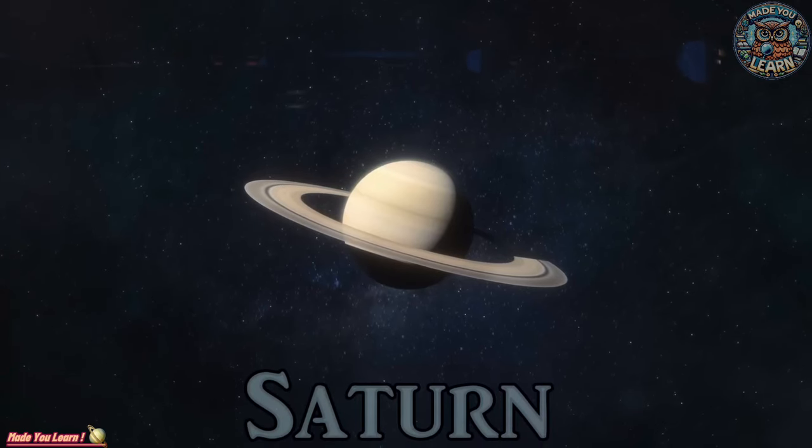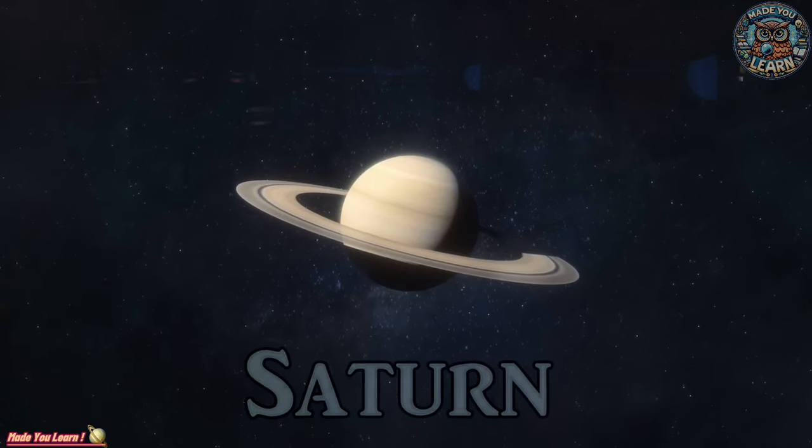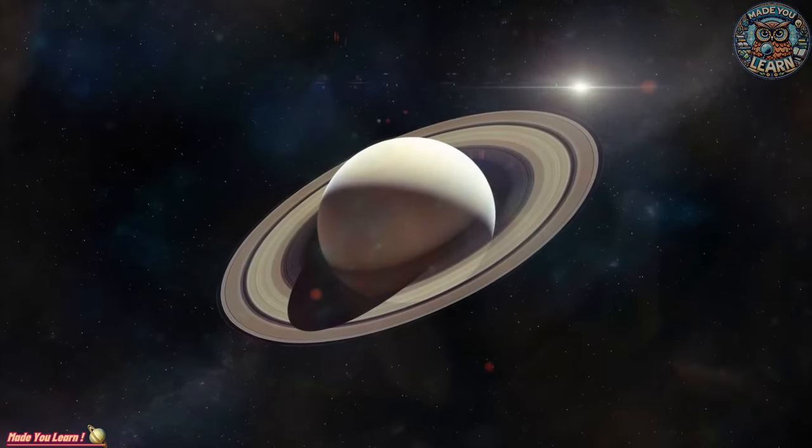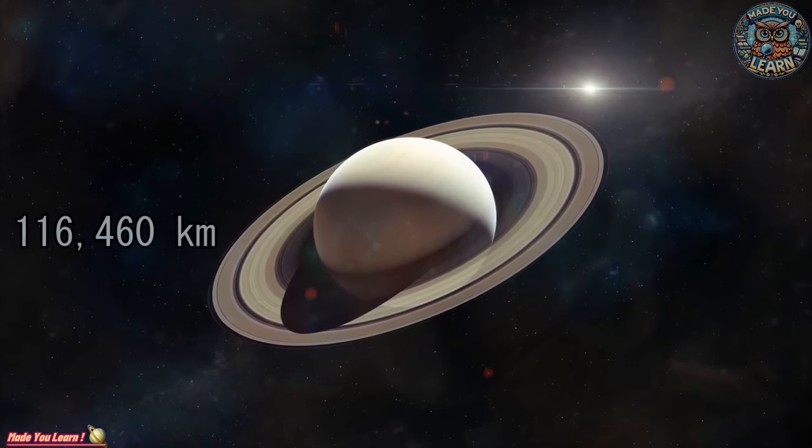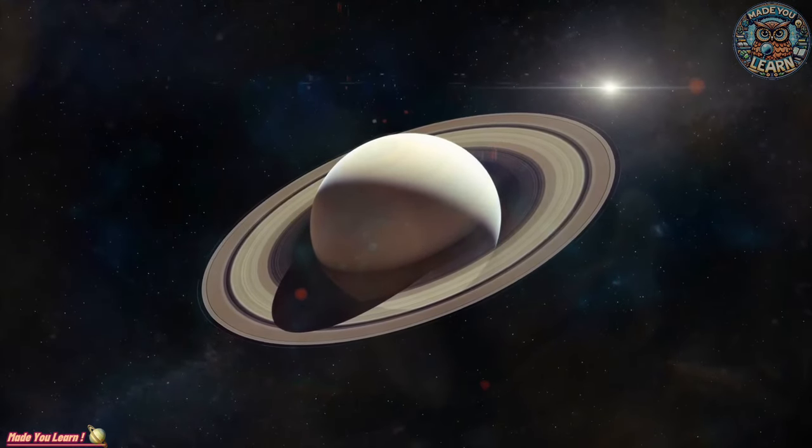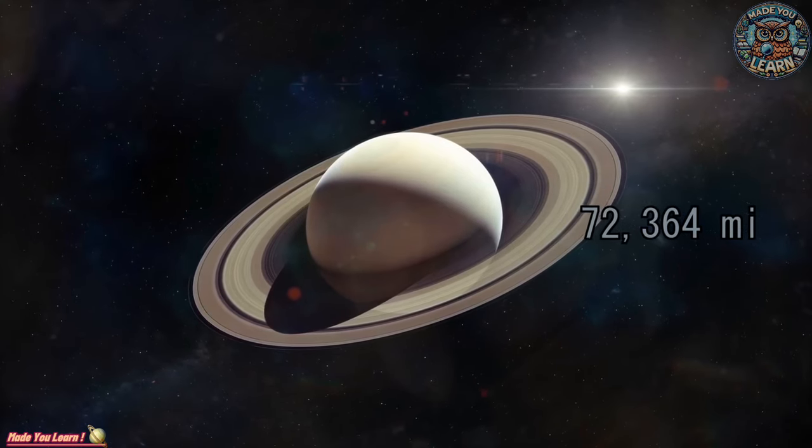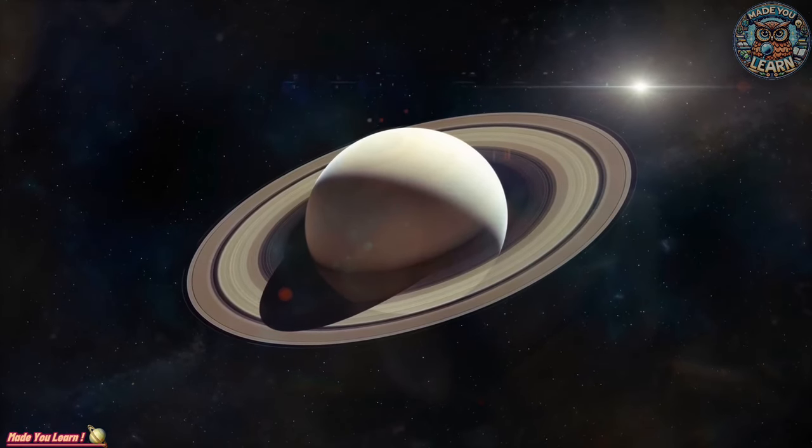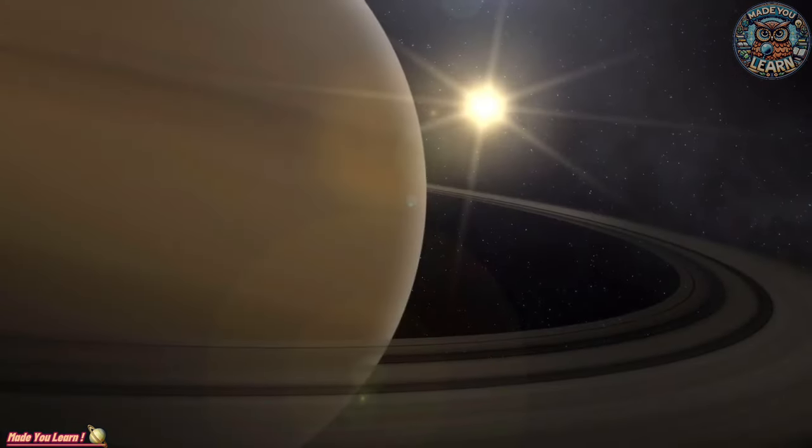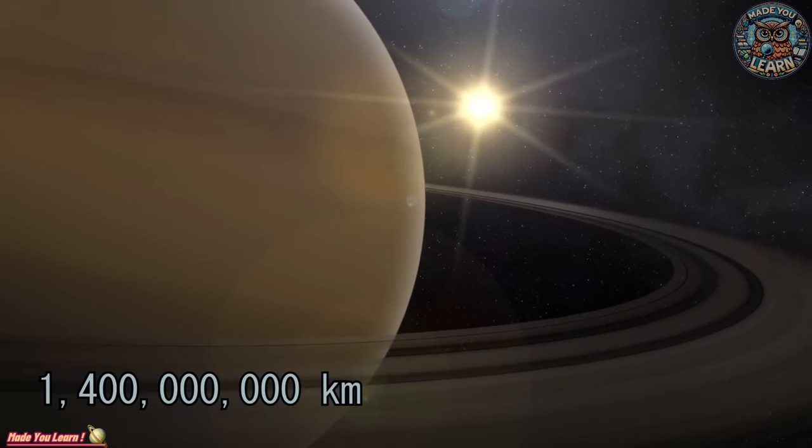Saturn, the ringed beauty, is best known for its stunning system of icy rings. This gas giant holds a special place in our solar exploration, not just for its breathtaking appearance, but also for its diverse moons, such as the methane lakes of Titan and the icy geysers of Enceladus.